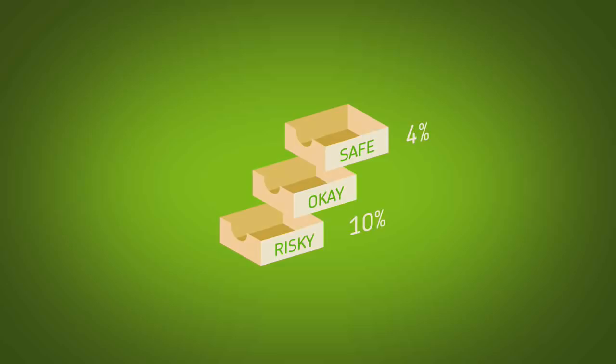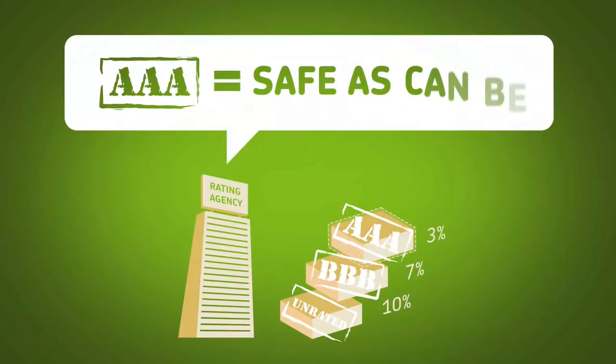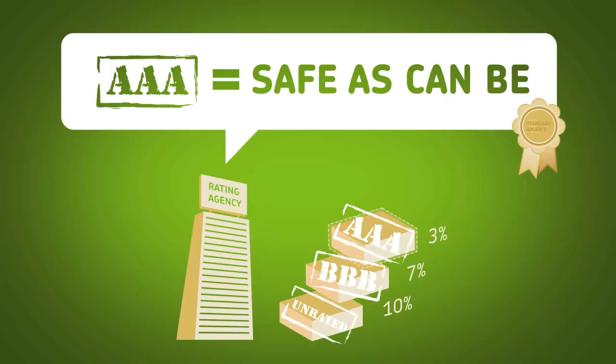To make the top even safer, banks will insure it for a small fee called a credit default swap. The banks do all of this work so that credit rating agencies will stamp the top slice as a safe triple-A-rated investment, the highest, safest rating there is. The okay slice is triple-B, still pretty good, and they don't bother to rate the risky slice.